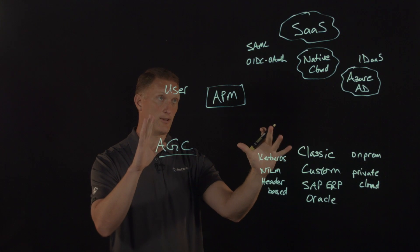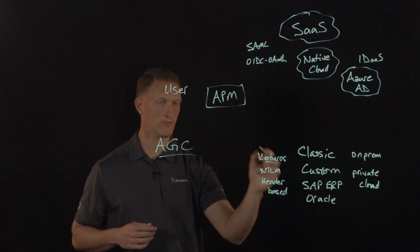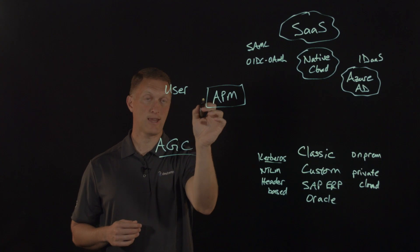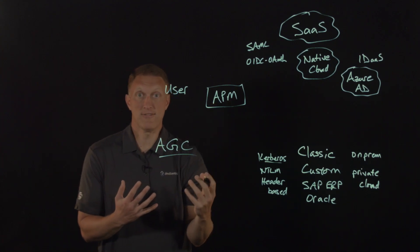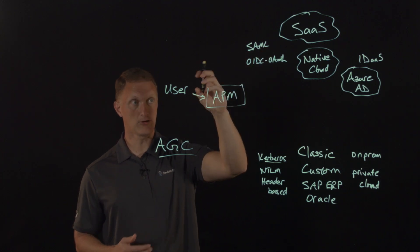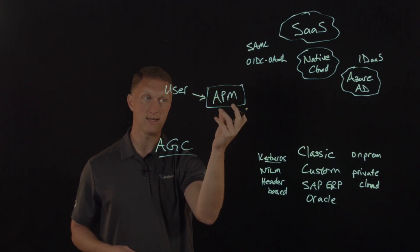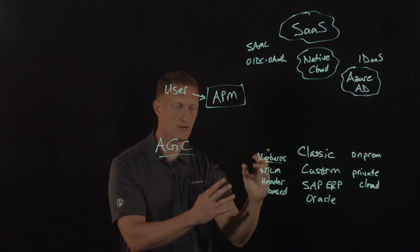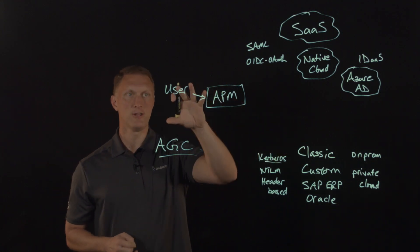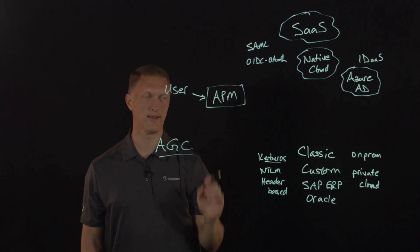At the end of all of this, if a user needed to access one of these classic custom applications that uses, say, Kerberos, they're still going to use the more modern technology of SAML and have the benefit of single sign-on as they interact here with APM. Then APM will take the SAML assertion that's generated through the whole SAML process and translate the data out of that SAML assertion in order to create the appropriate Kerberos or header-based or whatever authentication details these apps are looking for. The magic of the translation happens right here at the APM.